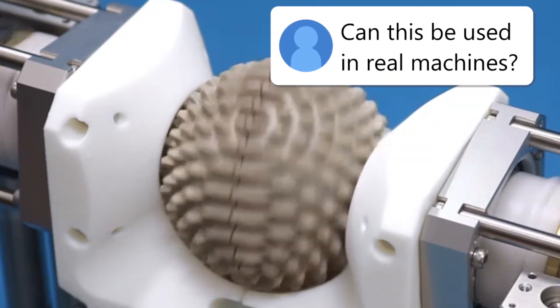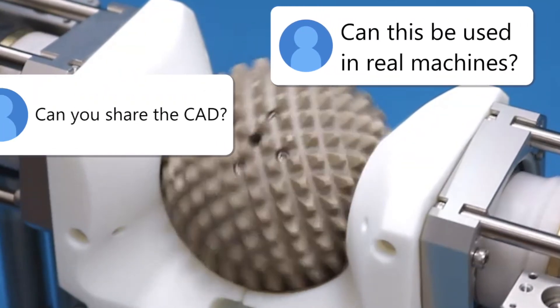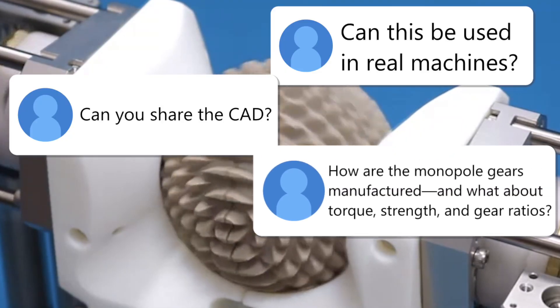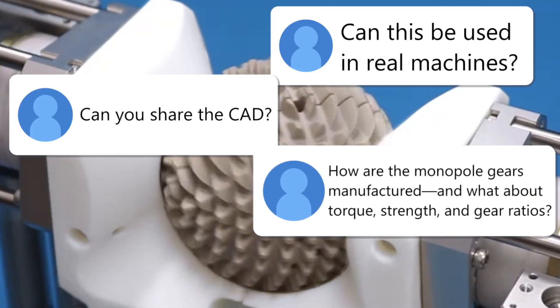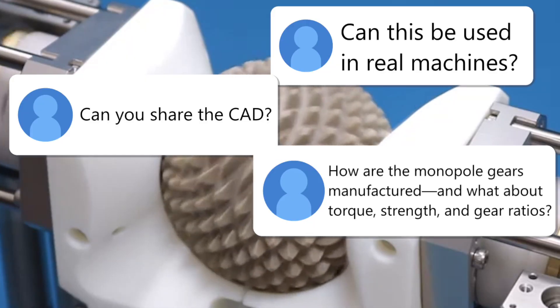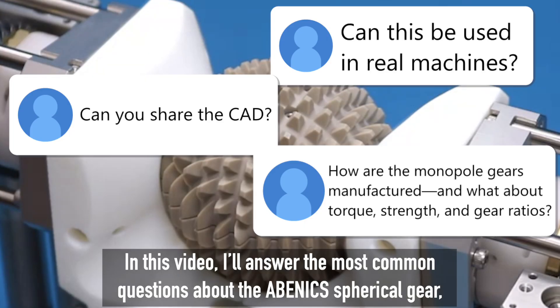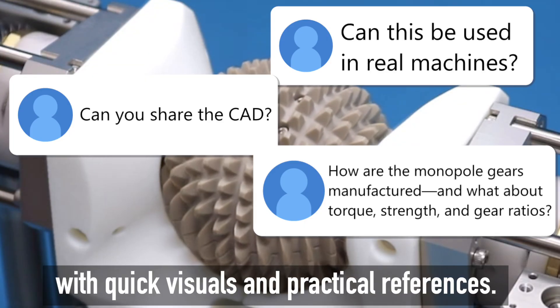Can this be used in real machines? Can you share the CAD? How are the monopole gears manufactured? And what about torque, strength, and gear ratios? In this video, I'll answer the most common questions about the AVENIX spherical gear, with quick visuals and practical references.